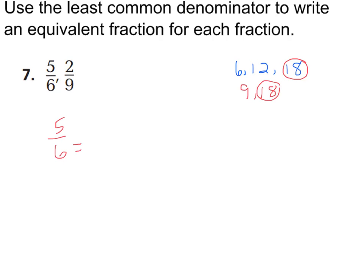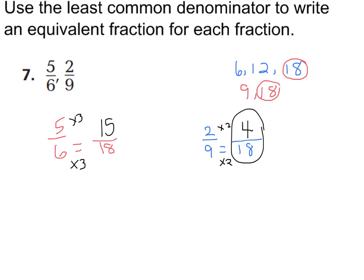Let's make our equivalent fractions. 5 sixths equals how many eighteenths? And 2 ninths equals how many eighteenths? I'm going to multiply 6 times 3 to get 18, so I multiply 5 times 3 and get 15. So 5 sixths is equivalent to 15 eighteenths. And for 2 ninths, 9 times 2 is 18, so 2 times 2 is 4. So these two fractions with denominator 18 are 15 eighteenths and 4 eighteenths.